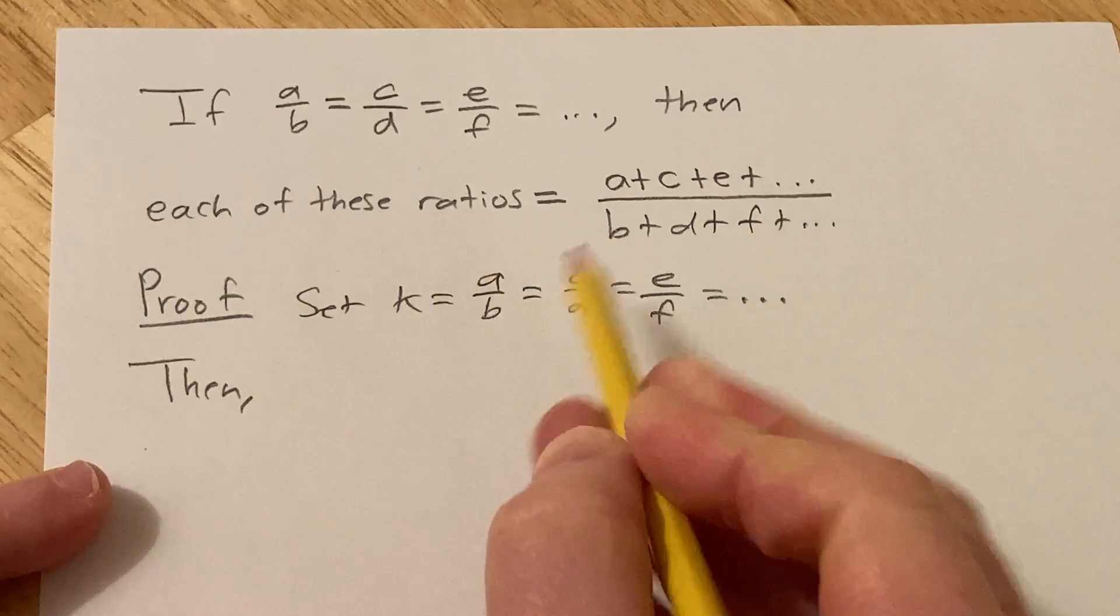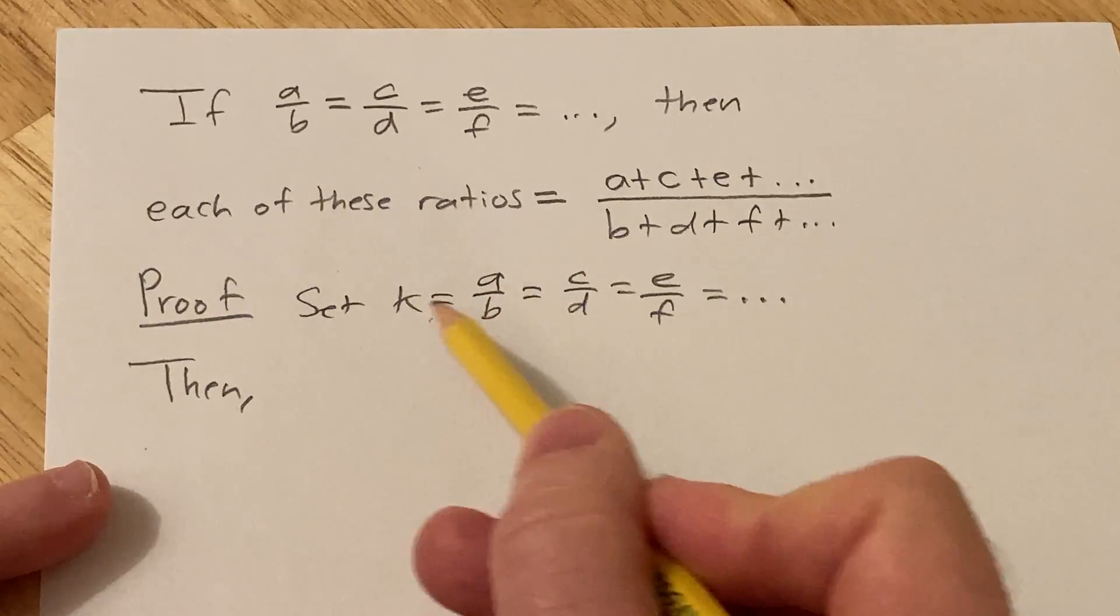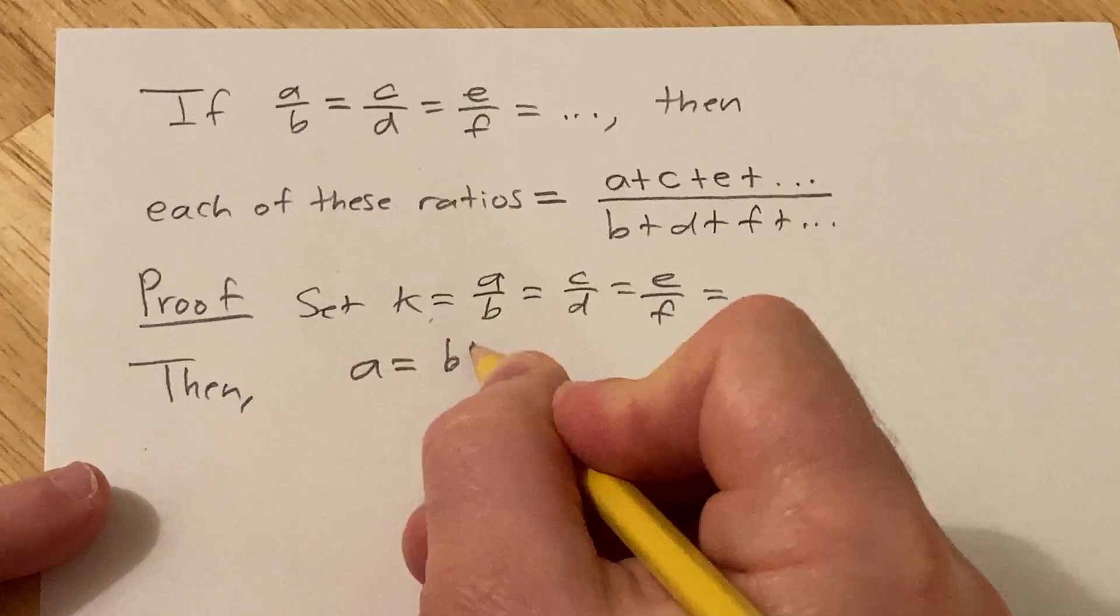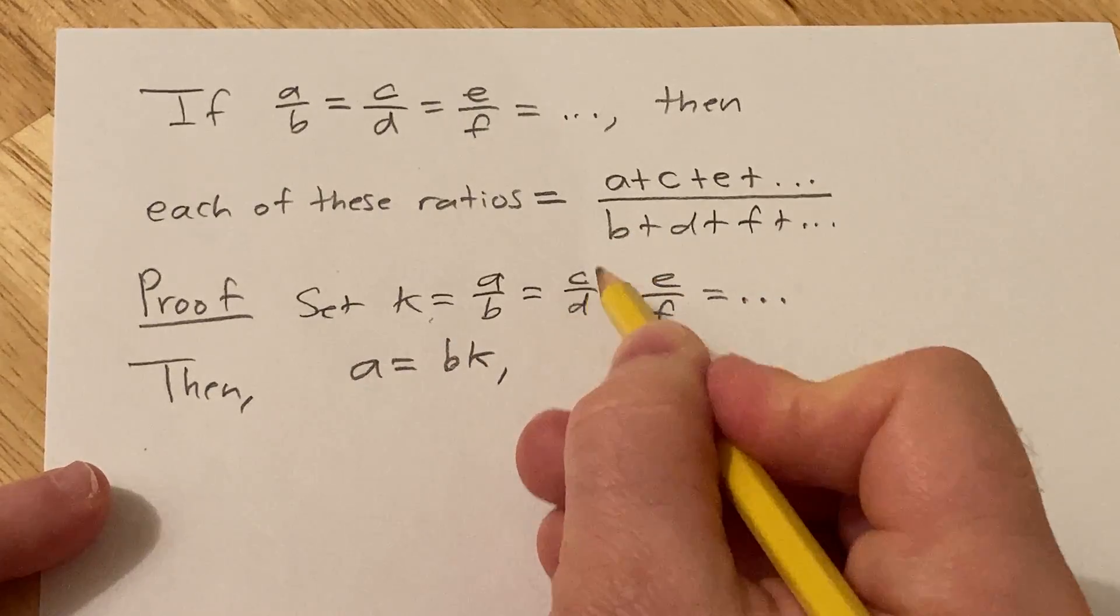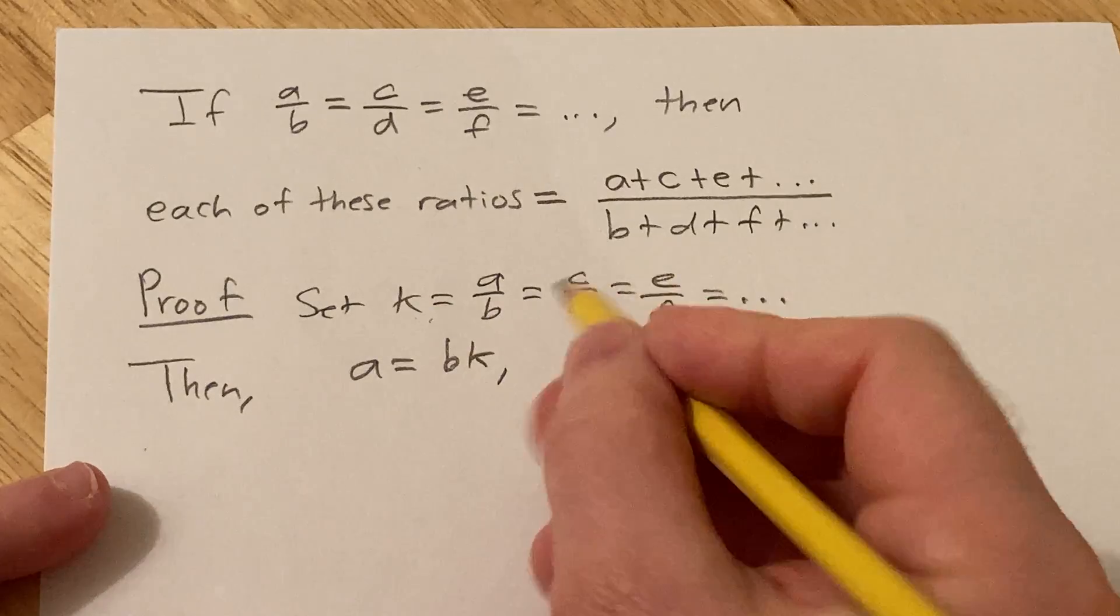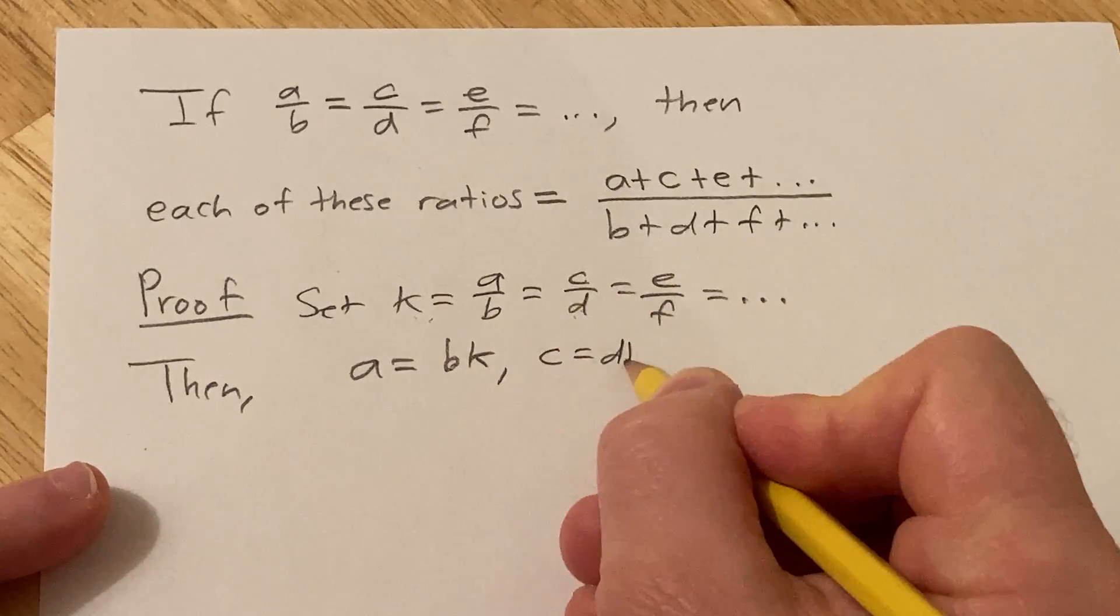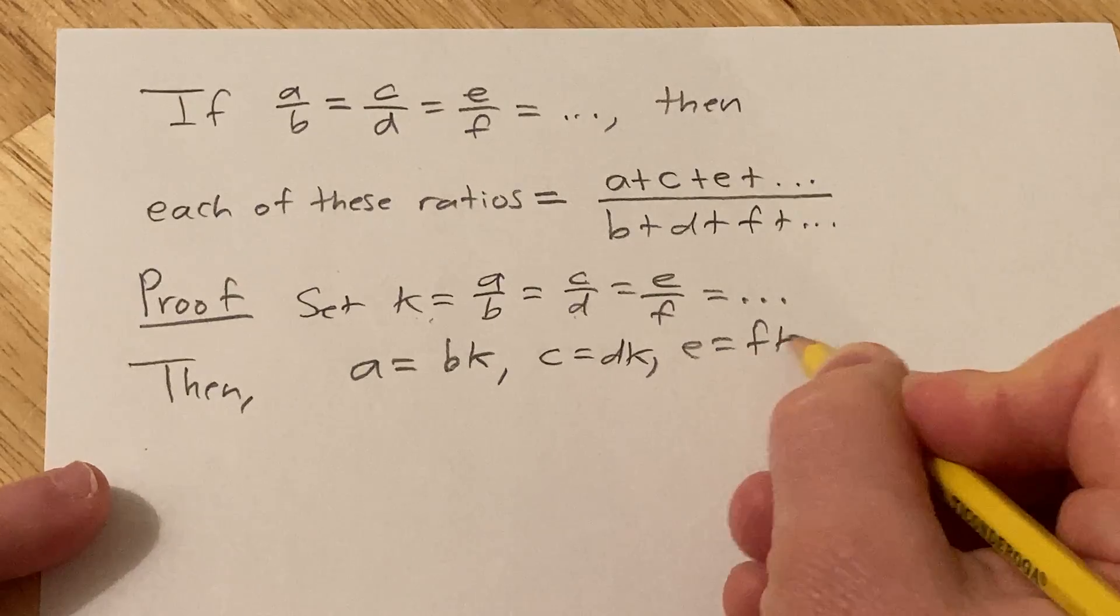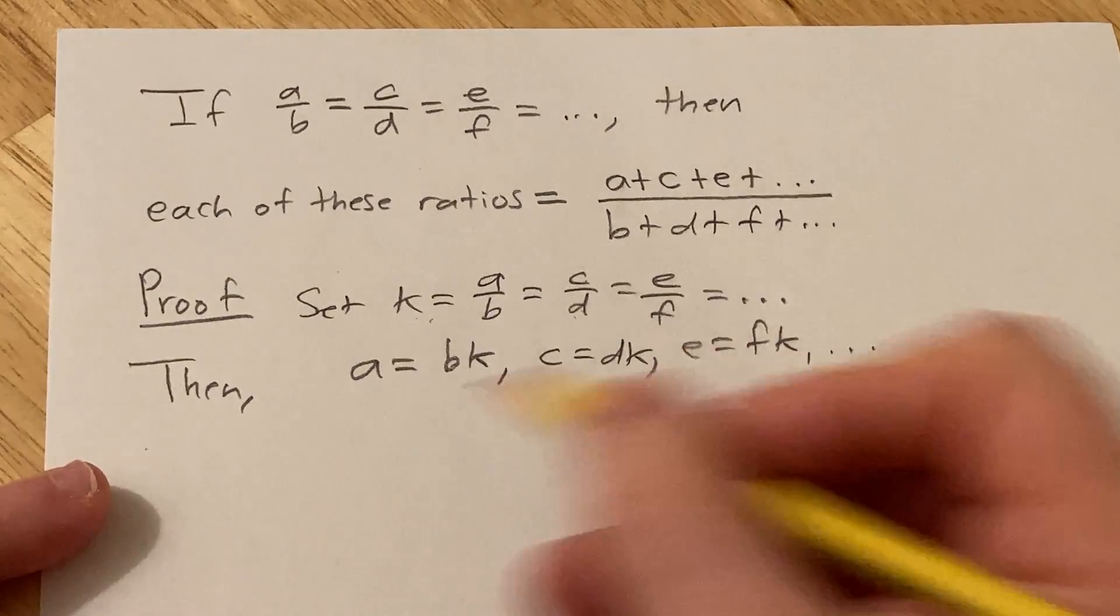since k is equal to a over b, we can multiply by b. So then a is equal to bk. Then c is equal to dk, because you can multiply by d. K is equal to c over d, so multiply by d. So c is equal to dk. And then e is equal to fk. Et cetera.